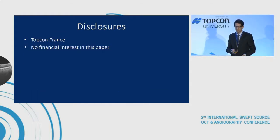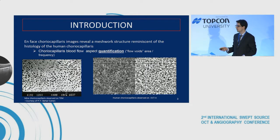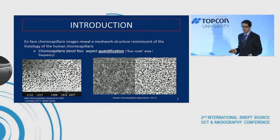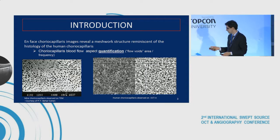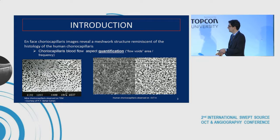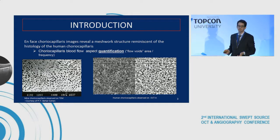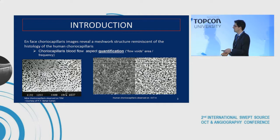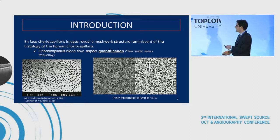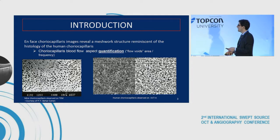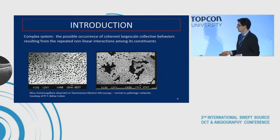We'll talk about the choriocapillaries, the second talk on this board. We know that OCT angiography has enabled us to get very good quality, high definition images of the choriocapillaries, and that these images, after special thresholding methods, are reminiscent of the choriocapillaries observed in vivo. An interesting property of these binary images is that they enable us to quantify the characteristics of the choriocapillaries.